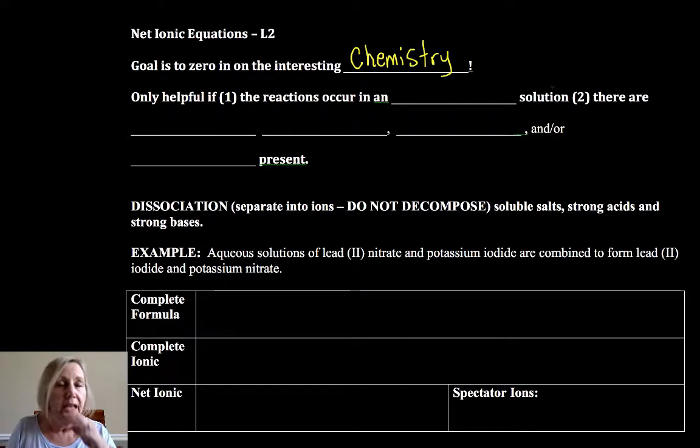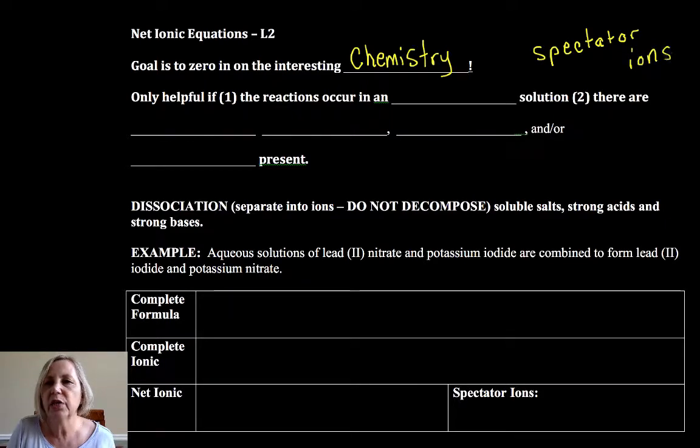So the other ions, there will be ions that are just kind of hanging out, kind of watching what's going on, swimming around in the solution and those are called spectator ions. We don't lose those, they're still in the solution but to write a net ionic equation we're going to ignore them and focus only on where new bonds are being formed and or broken.